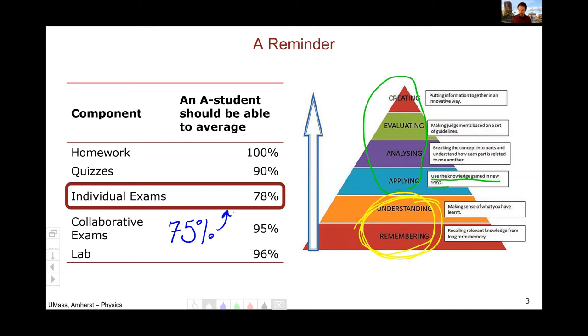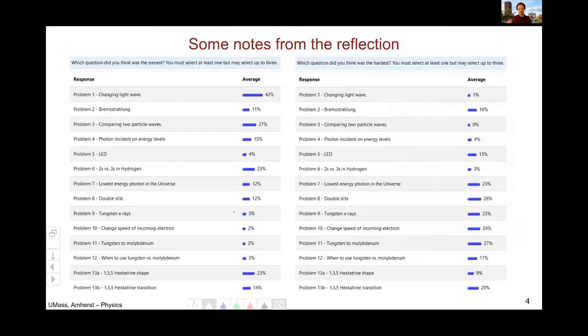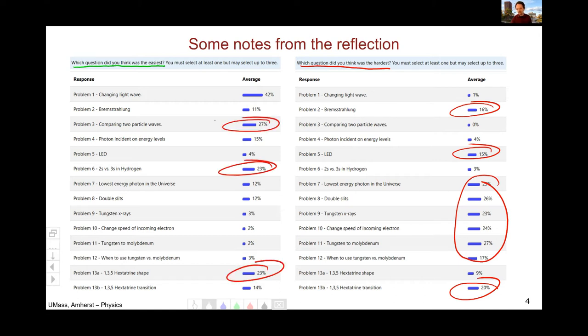Another reason I do not expect perfection on my exams can be seen very clearly with these notes from the reflection where I asked you to say which question do you think was the easiest and which question did you think was the hardest. And you can see very clearly that there is quite a bit of spread in which problems people thought were the hardest. And similarly, the easiest, there was quite a bit of spread on those. This is because people's brains work differently. People are bringing different experiences into the course. People are just different. And since they're bringing different things, people are going to find different problems easier or harder. So since different people will find different problems to be challenging, I don't actually expect anyone to really get all of them.